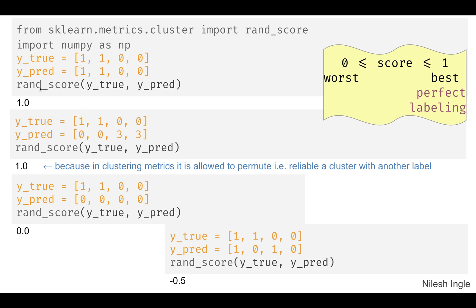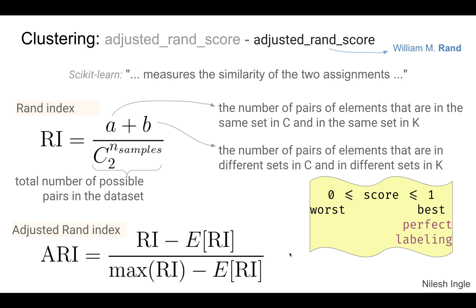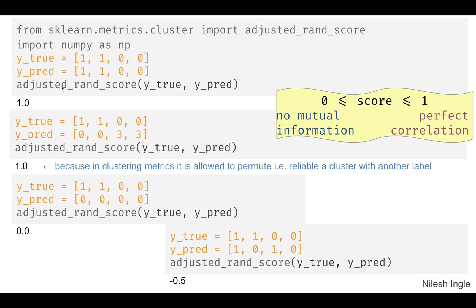The implementation uses rand_score with y_true and y_pred. Permutations are allowed — two clusters with different labels is acceptable — and the Rand score drops if clustering is off. There is also an adjusted Rand score, which subtracts the expected value from the numerator and divides by the maximum Rand index minus the expected value. A score of one is still the best, and the implementation uses adjusted_rand_score.